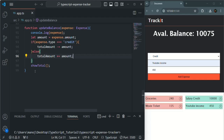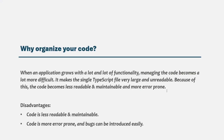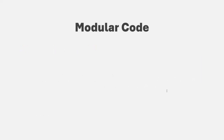However, when working in a real world project, your application will have a lot of functionality and hence a lot of code. If you are writing your code in a single file, that file will have hundreds of thousands of lines of code. When the project grows with a lot of functionality, managing the code becomes a lot more difficult. It also makes the single TypeScript file very heavy and unreadable, and it has other disadvantages as well. So when your application is going to have a lot of functionality, organizing your code becomes much more crucial. For developing a large complex application, you would want to write modular code.